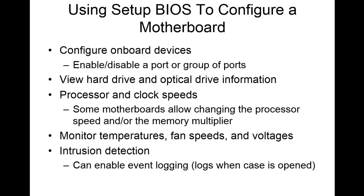When setting up the BIOS to configure a motherboard, you can configure onboard devices — enabling or disabling ports or even a whole group of ports. You can see information about your hard drive and optical drives, and change processor and clock speeds. Some boards allow changing the processor speed or memory multiplier. You'll hear about overclocking, which can maximize processor performance but carries risks if done incorrectly. You can also check fan speeds, voltage, and monitor temperatures here in the BIOS.